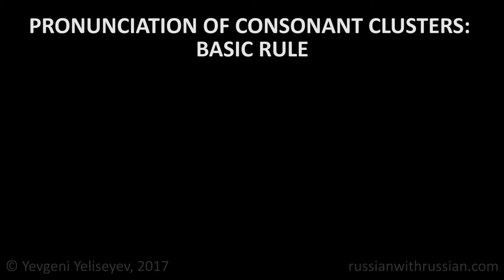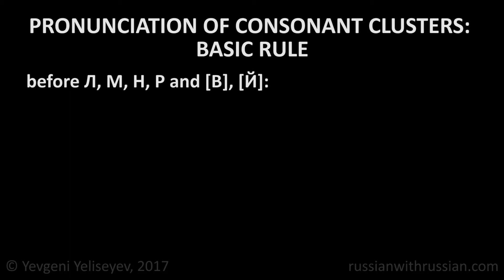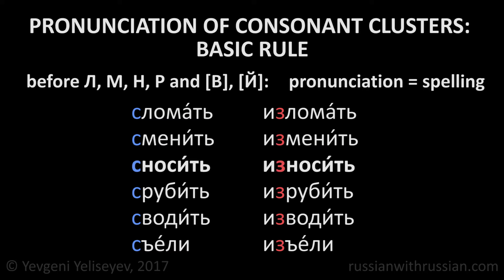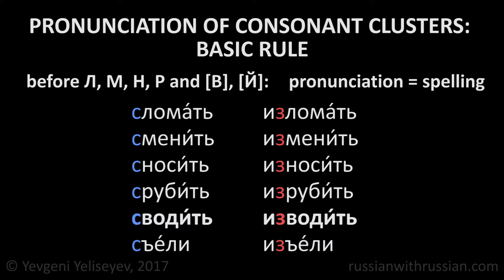Meanwhile, the above-mentioned mutations don't occur before the letters Л, М, Н, Р, denoting sonorant consonants, and also before the sounds В and Й. Before these sounds, we pronounce the same things that we write — the pronunciation is not different from the spelling. Сломать. Изломать. Сменить. Изменить. Сносить. Износить. Срубить. Изрубить. Сводить. Изводить. Съели. Изъели.